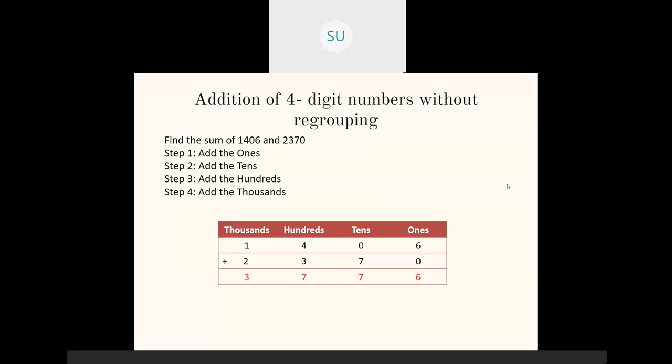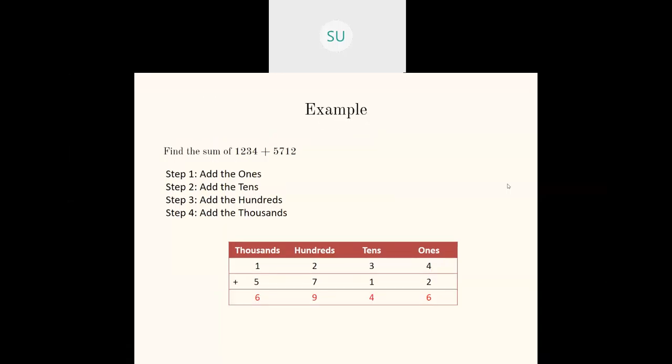Then we saw another example: 1234 plus 5712. First we write them vertically in columns in the table. Then we add the ones: four plus two is six. Then we add the tens: three plus one is four. Then we add the hundreds place — two and seven, that is two plus seven equals nine. In thousands place I have one and five, so one plus five is six. So the answer is six thousand nine hundred and forty-six.